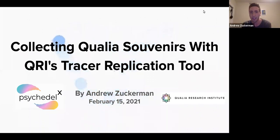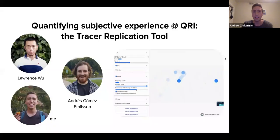My name is Andrew Zuckerman, and I'm a researcher at Qualia Research Institute, which is a nonprofit independent group studying consciousness. Today, I'm going to be talking about a software tool we made called the Tracer Replication Tool. I'm also going to talk about how it's used to collect Qualia souvenirs. This is a little snippet of the tool, and this is something that I made along with Lawrence and Andres, who are both working at QRI alongside me.